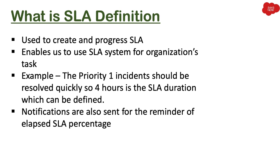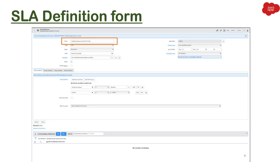When you create SLA definitions, there are notifications which can be sent as reminders based on elapsed SLA percentage. For example, if you have four hours to work on a task and 50% of the time — that means two hours — has elapsed, you will get a reminder. In ServiceNow you can create different SLA definitions for different tables and tasks.